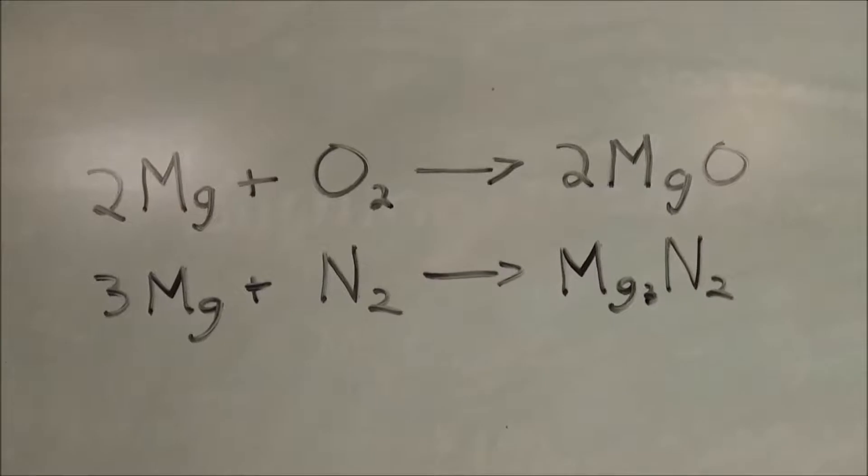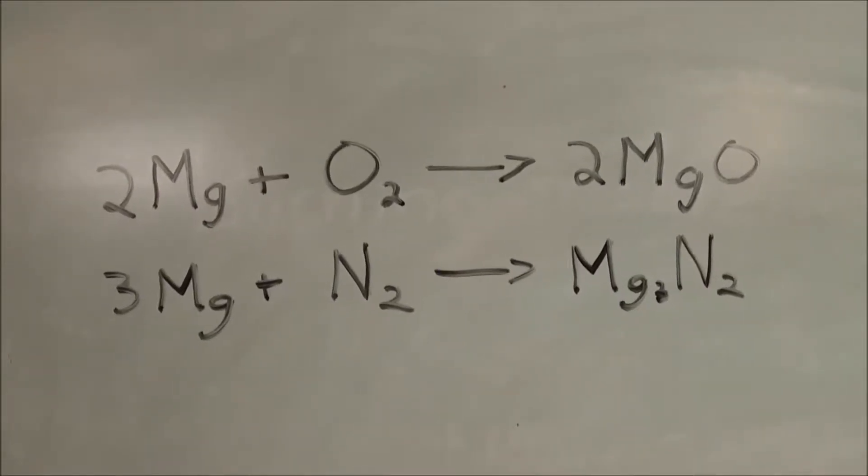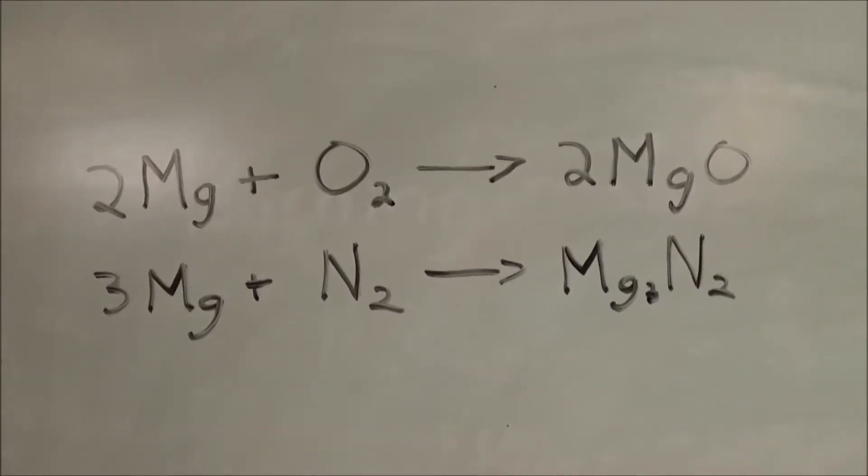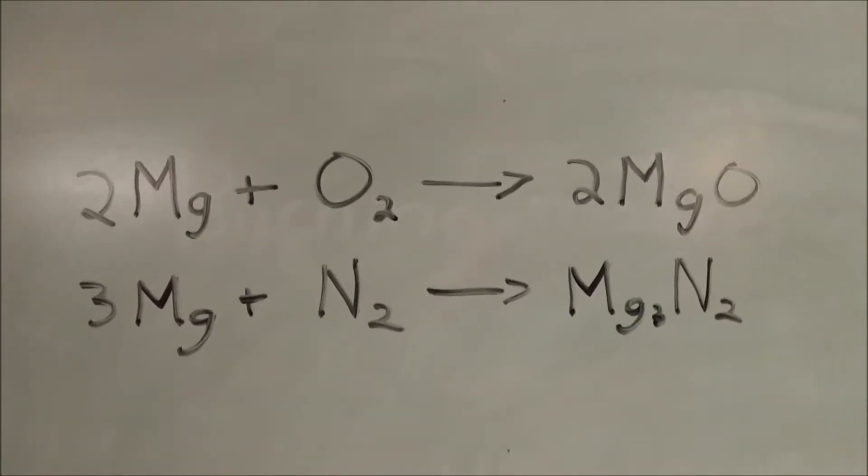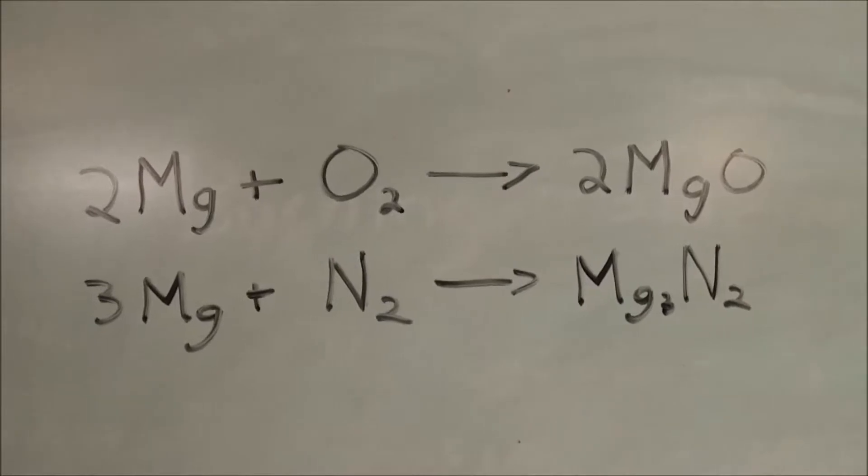Air is composed primarily of nitrogen and oxygen, and there are two possible reactions that will take place. The top reaction is much more favorable. Magnesium reacts with oxygen to form magnesium oxide.